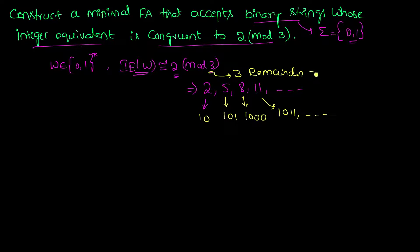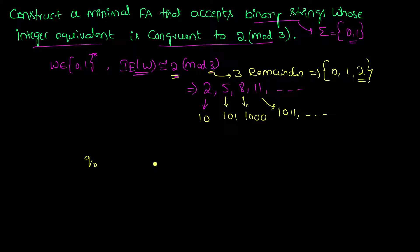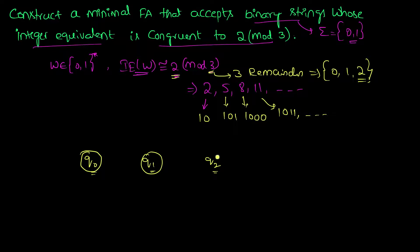The remainders can be either 0, 1, or 2. We are only concerned about remainder 2. So we will have 3 states: q0, q1, and q2. q0 corresponds to strings whose integer equivalent when divided by 3 leaves remainder 0; q1 leaves remainder 1; q2 leaves remainder 2. These are our three states in the DFA and q0 is our initial state.